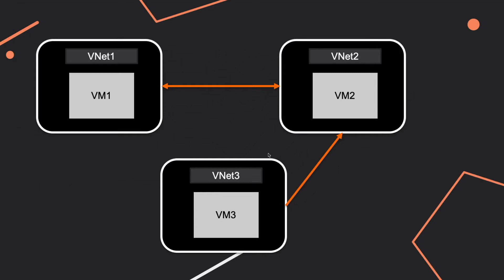When you see a question like 'can virtual machine 1 connect to virtual machine 2 or virtual machine 3,' what you have to pay attention to is the connection between the vnets. In this case vnet 1 and vnet 2 are bi-directional, but vnet 3 is only connected to vnet 2 in one direction.